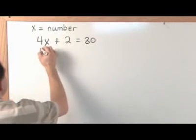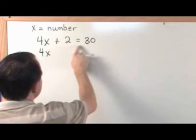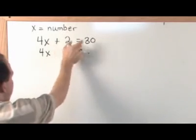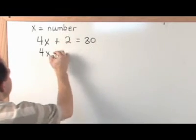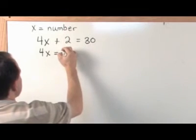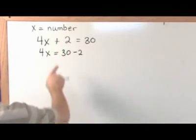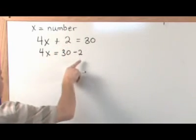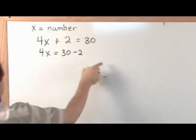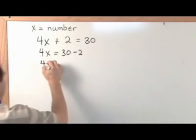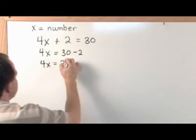So to do that, going back to your basic algebra, we'll subtract two from both sides. So this two will go away. Two minus two is zero. And on the right-hand side, we'll have 30 minus two. So all I've done is subtract two from the left, gets rid of that two, and two from the right. And I actually haven't done any math yet. So 4x is equal to 28.